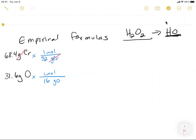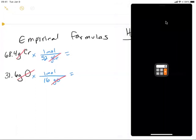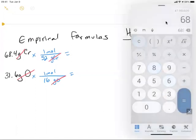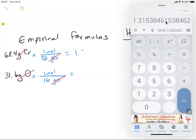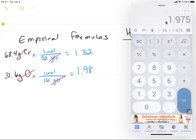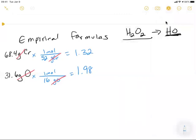So I'll go back here and I've got 52. Now I'm gonna cut grams. Let's go back to, okay, now let me get my calculator out. All right. So I want 68.4 divided by 52. And that's 1.32. You always want to do two decimals. And then I've got 31.6 divided by 16. And I get 1.98. So this is the number of moles.